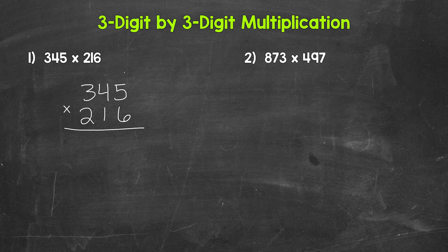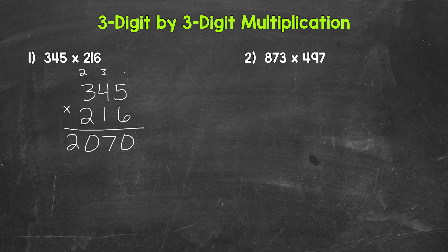We start with the six in the ones place and do six times five. That gives us 30, so we write our zero and carry the three. Then we have six times four, which is 24, plus three is 27. Carry the two. Then we have six times three, which is 18, plus two is 20. We are done with this six, done with this three, and done with this two. Crossing numbers off when we are done with them is helpful, because we don't want to confuse them with any other numbers later in the problem. It helps keep us organized.